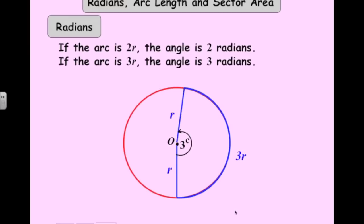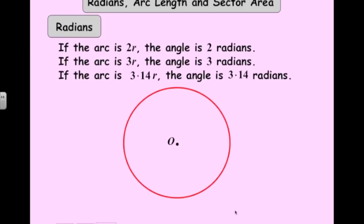And in fact, you'll see that if you make the length of the arc 3.14 times the length of the radius, that angle there is 3.14 radians. And yes, that angle there is 180 degrees. And that's the key thing here to get the relationship. 180 degrees is equivalent to pi radians.